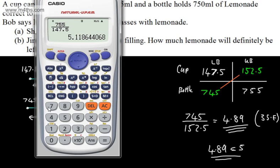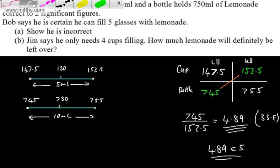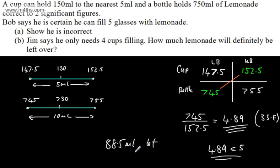So all we're doing now is using this particular result that we found here. If we put that into a calculator, we've got 745 over 152.5. Now he can definitely say, assuming he doesn't spill it, that there's going to be 88.5ml left over. So 88.5ml left, and that is going to be correct to three significant figures.